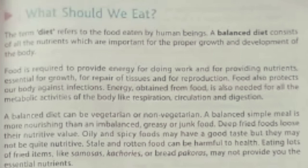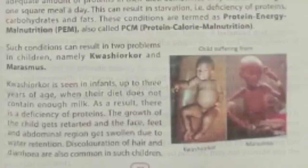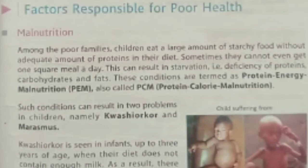A balanced diet can be vegetarian or non-vegetarian. You should avoid oily and spicy food, because although oily and spicy food is good in taste, it is not good for our health. These are factors responsible for poor health. This is known as malnutrition. Malnutrition means if a person is not taking a proper diet, their health will be very poor.